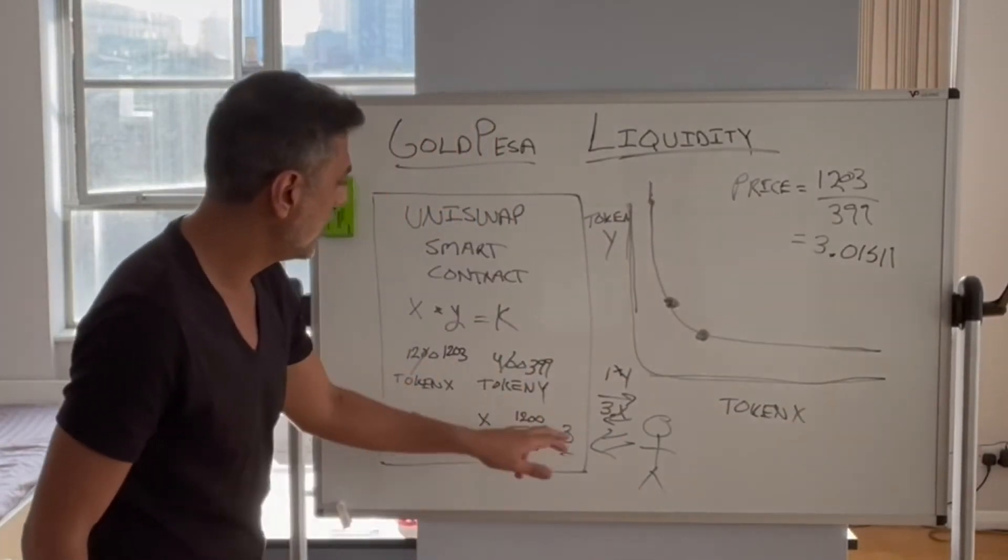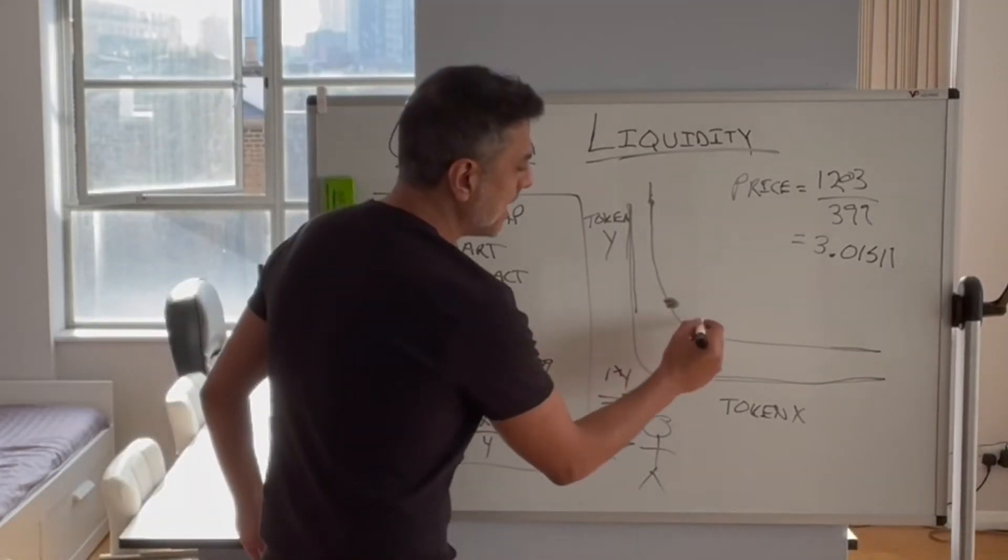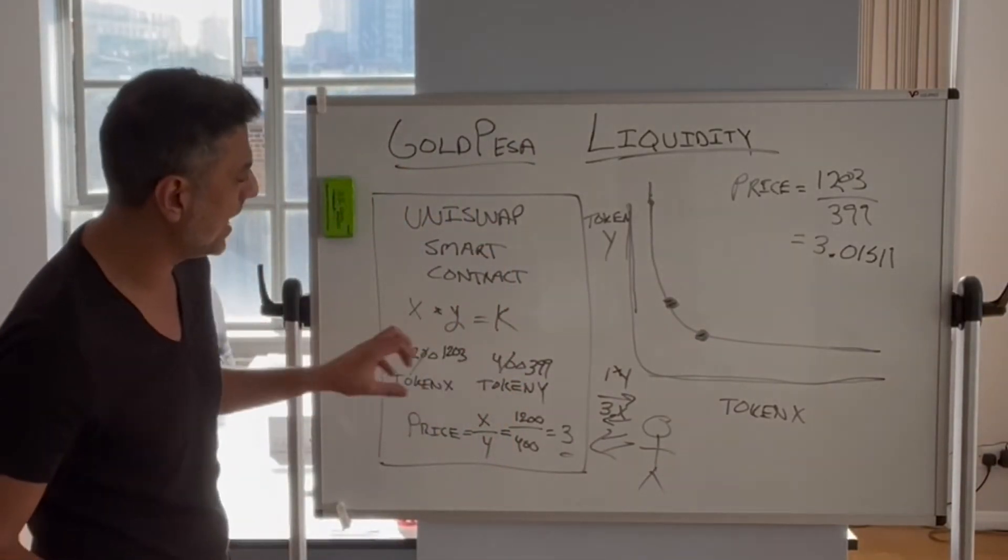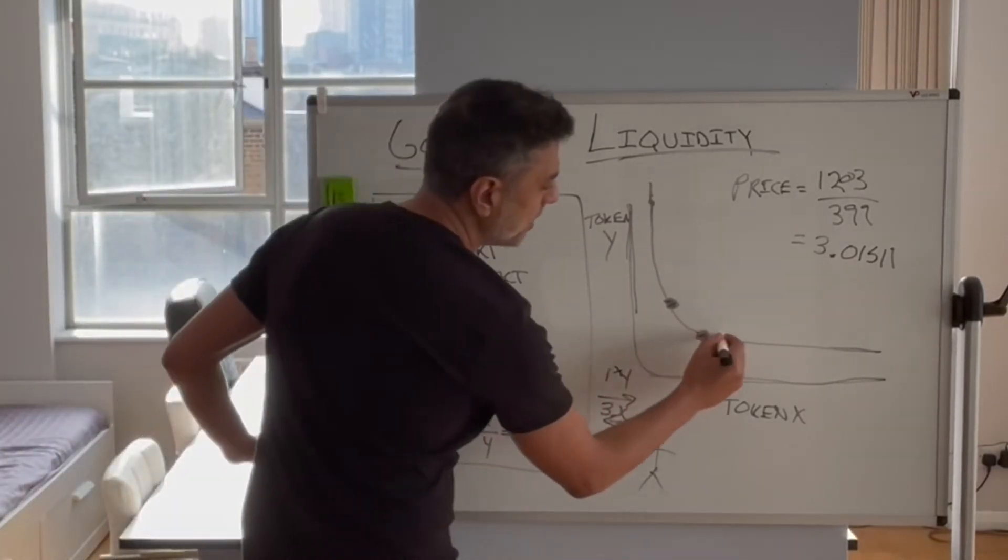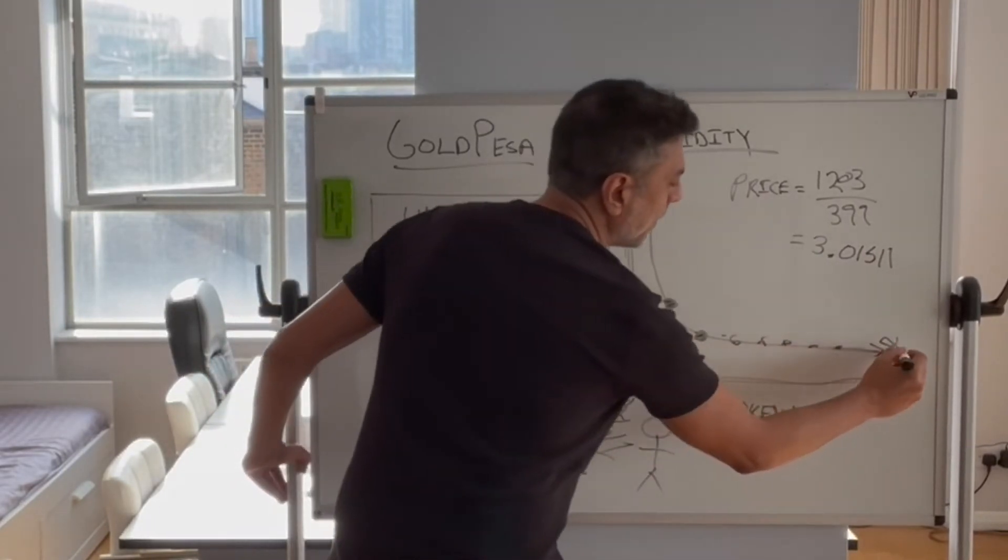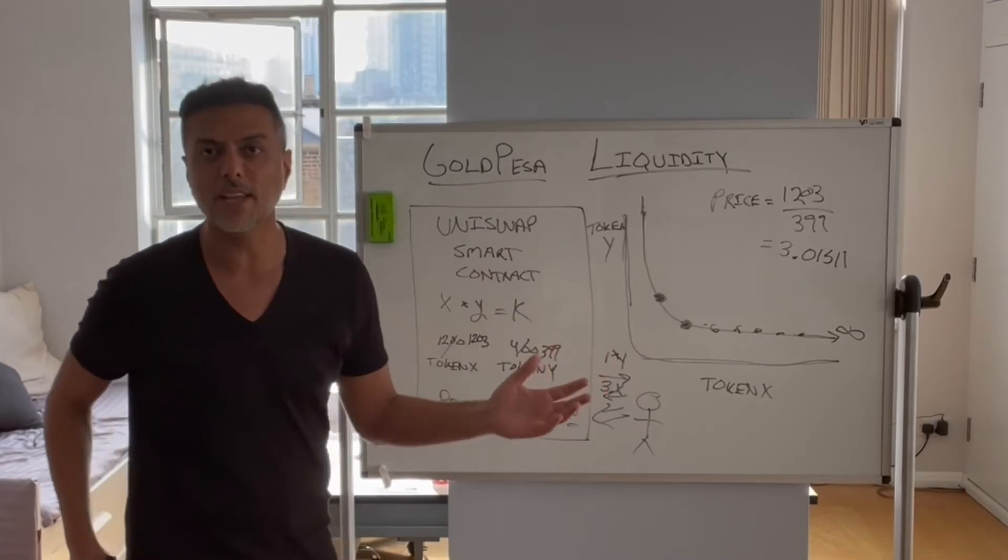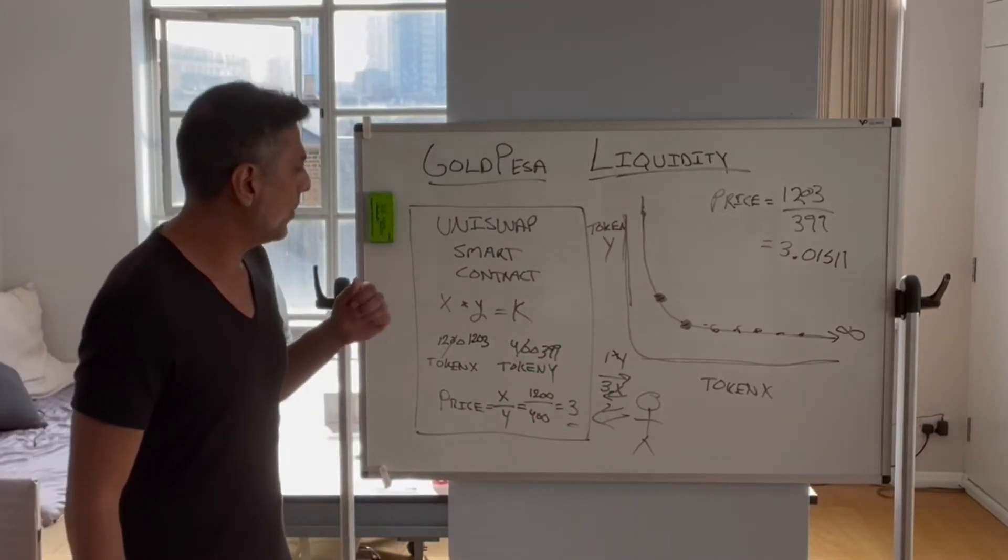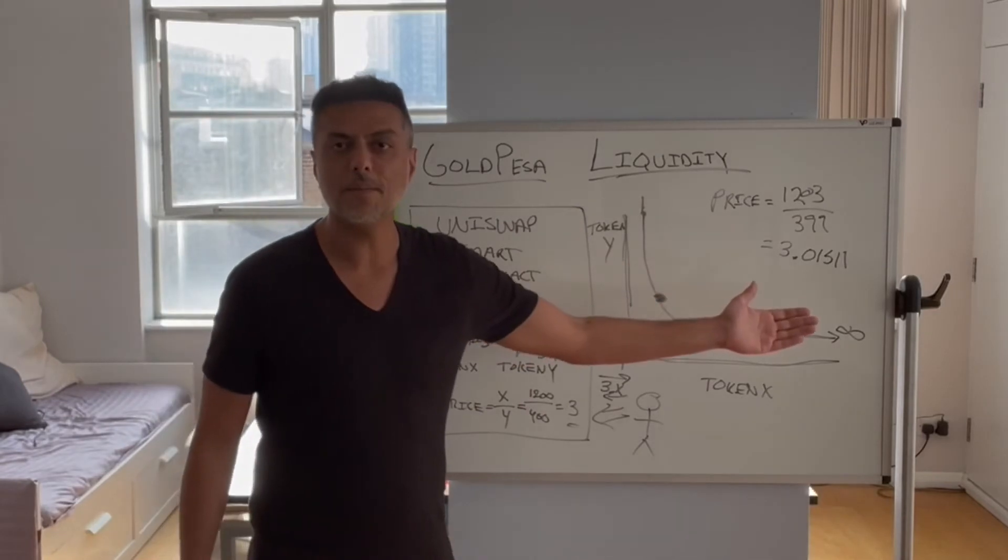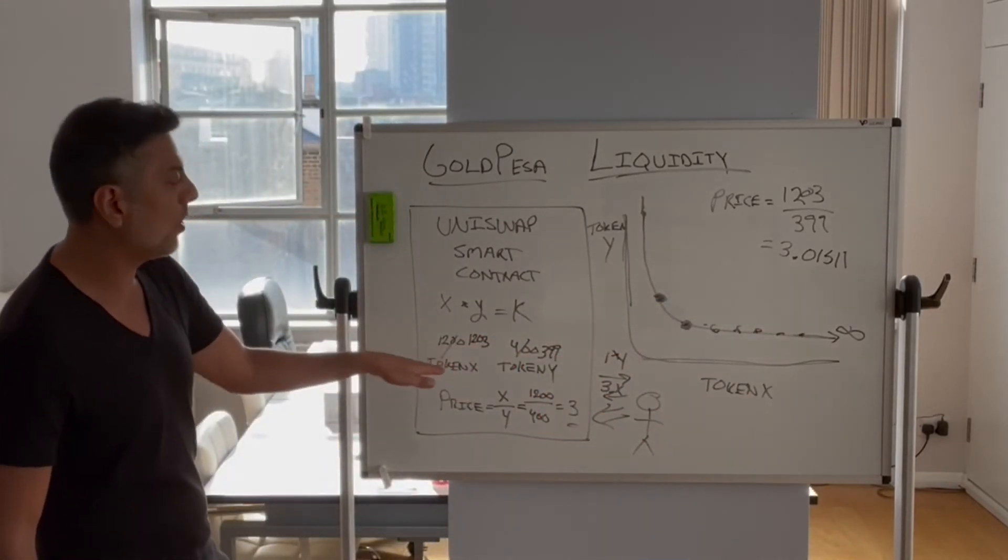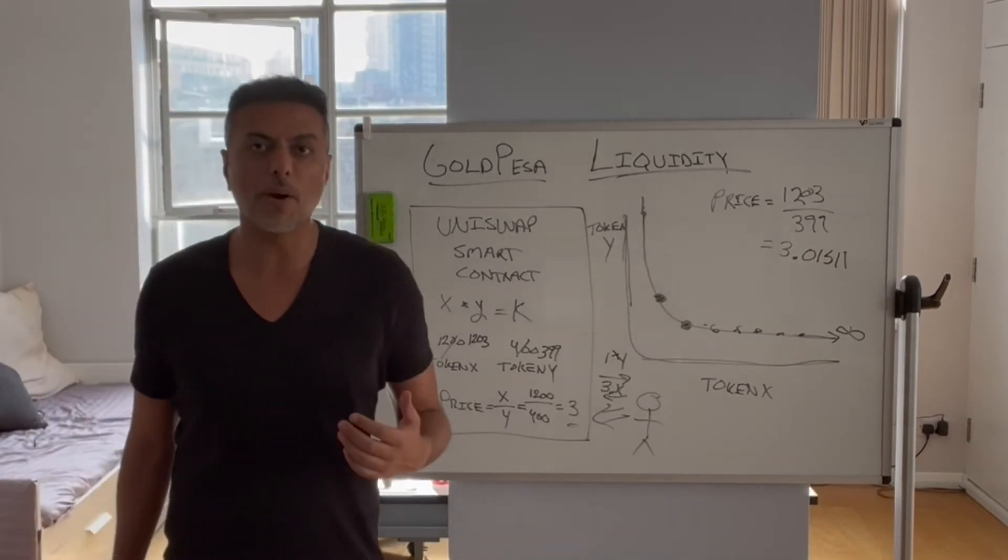So the price has increased when somebody came to buy token y and deliver token x. And as that is happening, and more and more people are coming to this smart contract buying and selling and taking more of token y and depositing more of token x, slowly you move down the curve until infinity. What this means is that this liquidity that is placed in here is placed from 0 to infinity in Uniswap version 2.